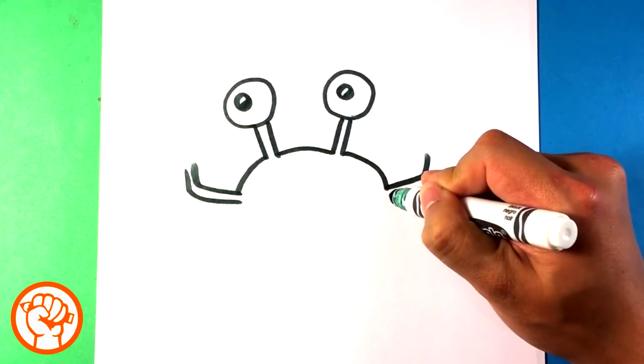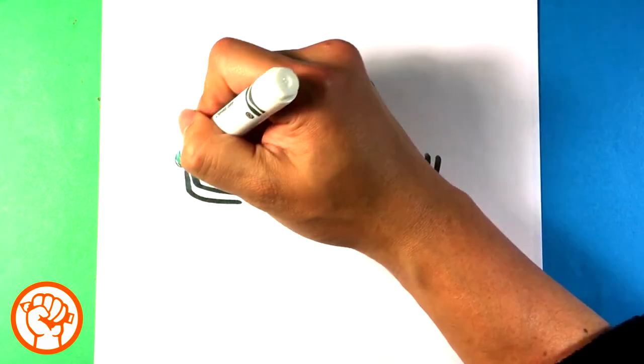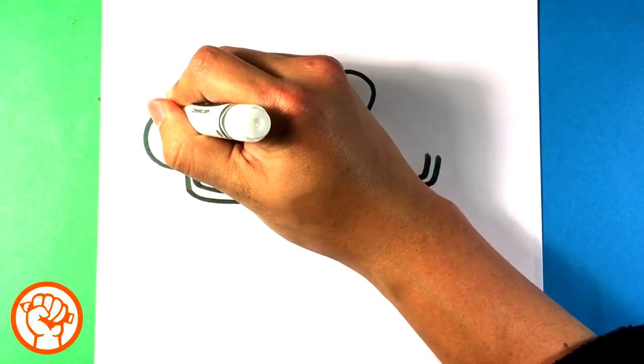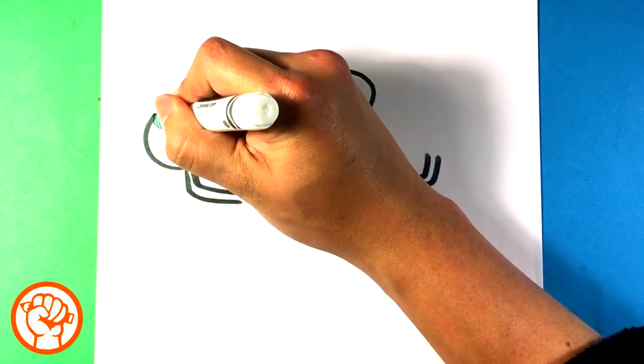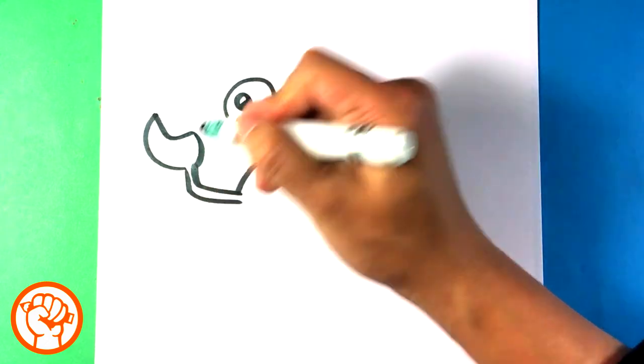And an arm over here is gonna pull out as well. Round, kind of an L shape. It's gonna come down.